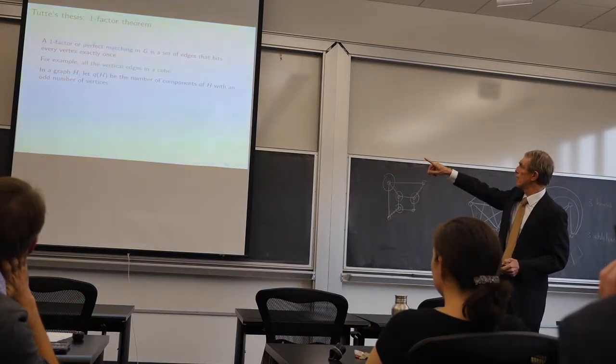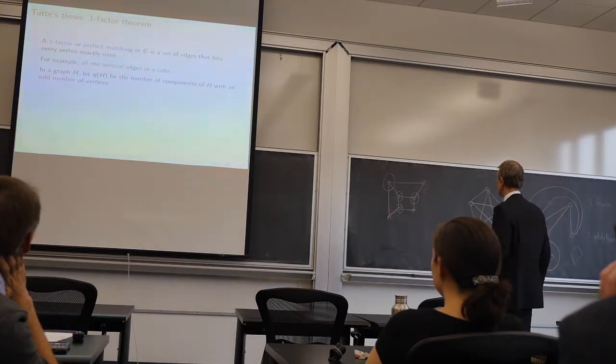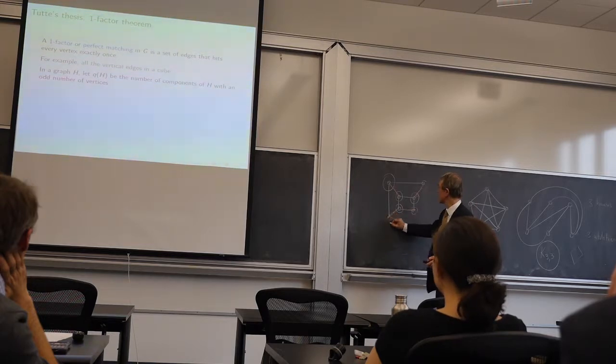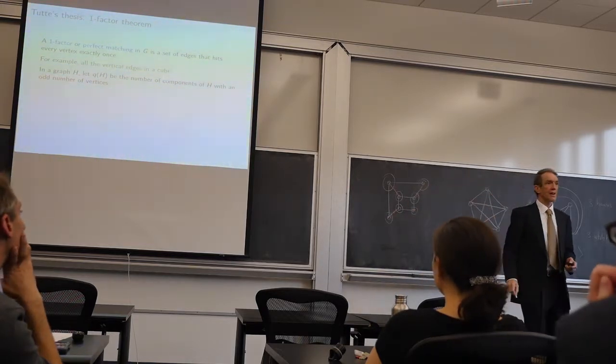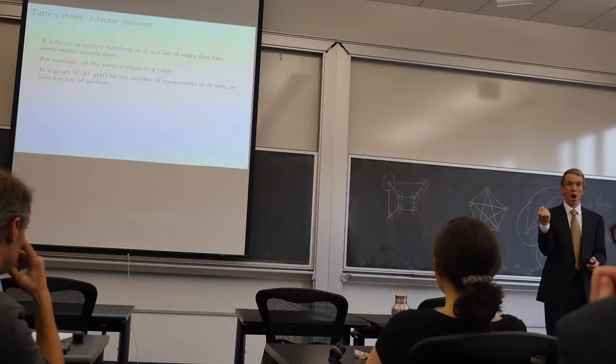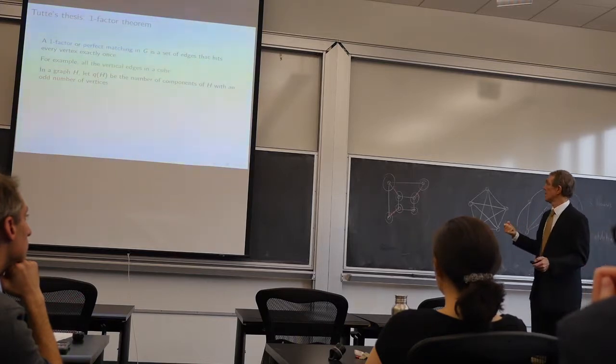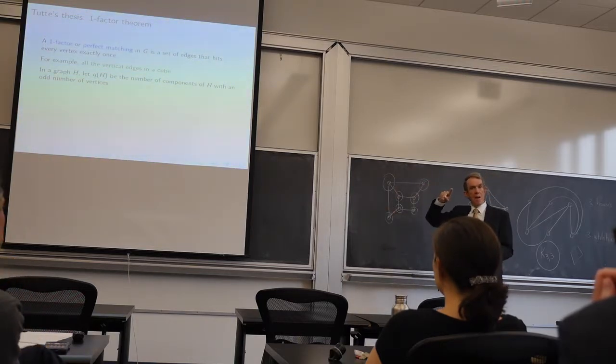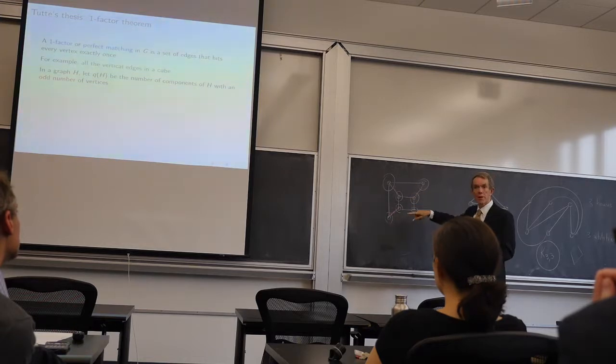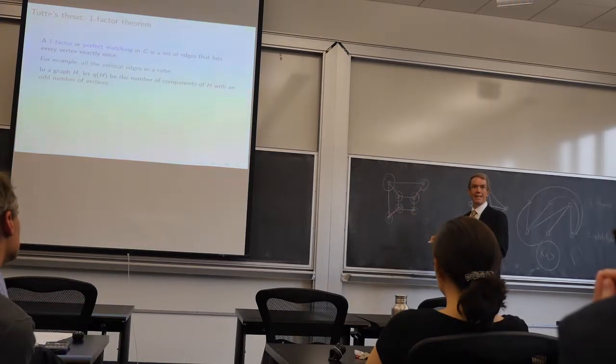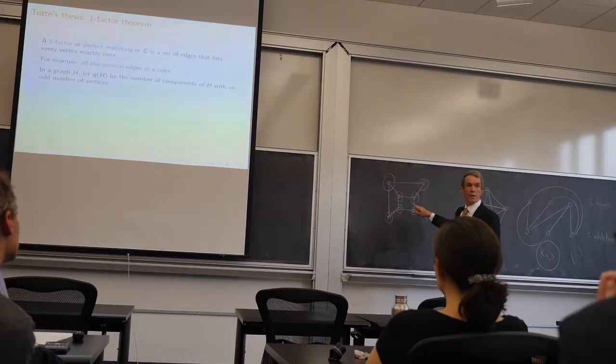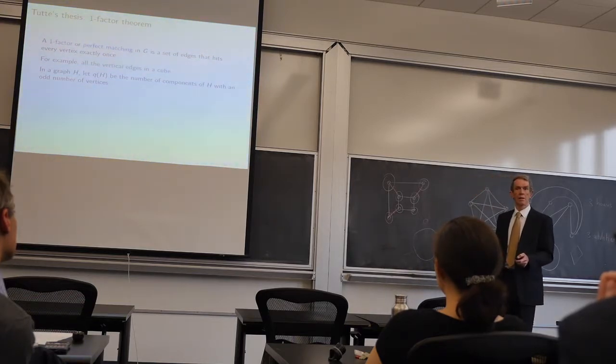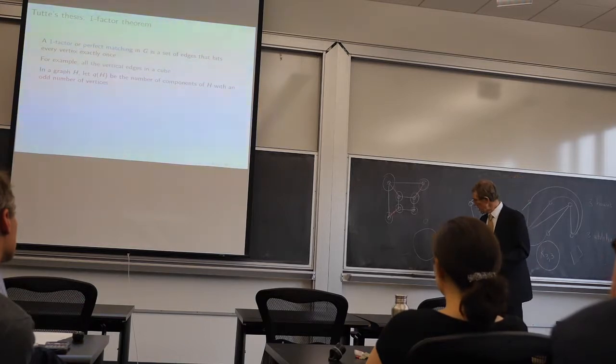The number of components with an odd number of vertices. I took away one vertex and I got one odd component. If the original graph was going to have a matching, this has got an odd number of vertices. I've only got one more vertex to put back in. Can you see that there has to be at most one component with an odd number of vertices?